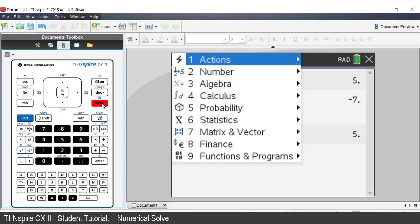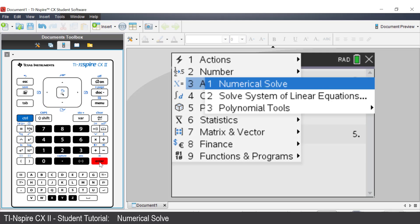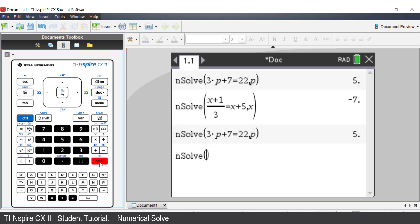Press the Menu key. Select Algebra by using the down arrow key and pressing Enter. Select Numerical Solve by pressing Enter. Enter x squared minus x minus 6 is equal to 0. Then comma x.